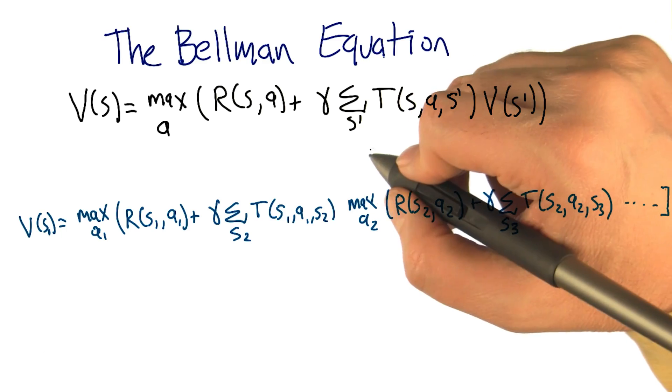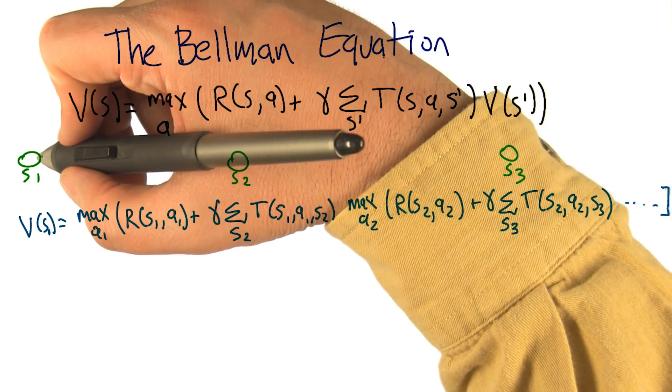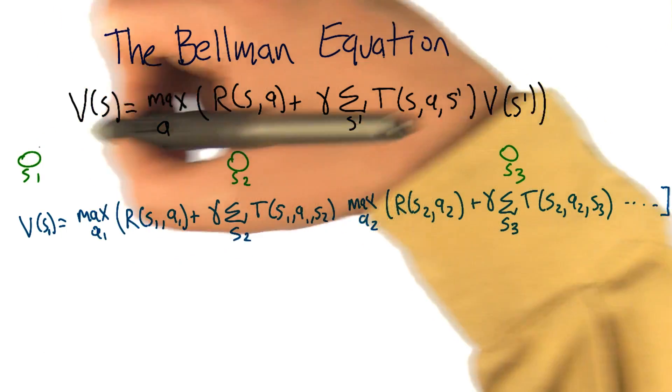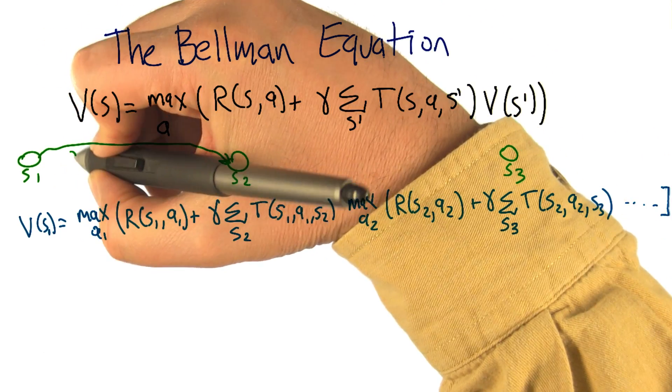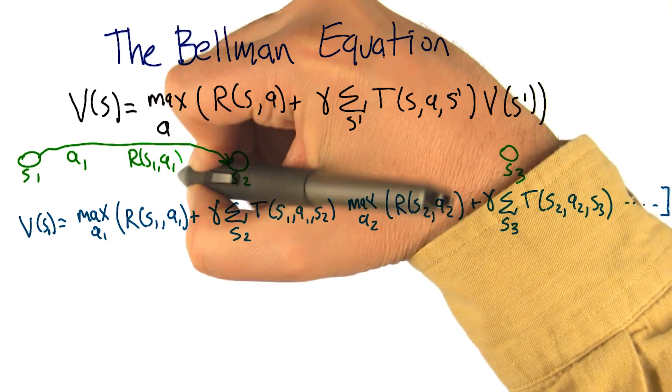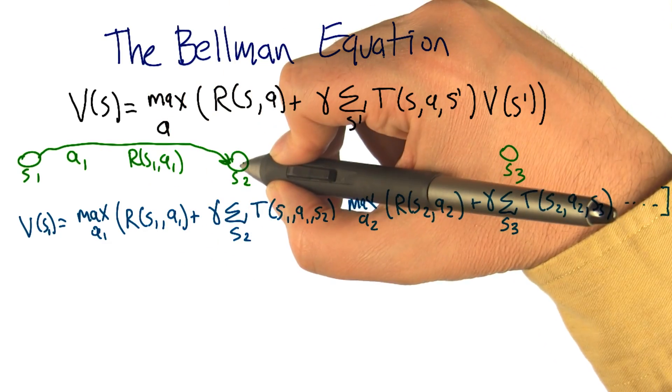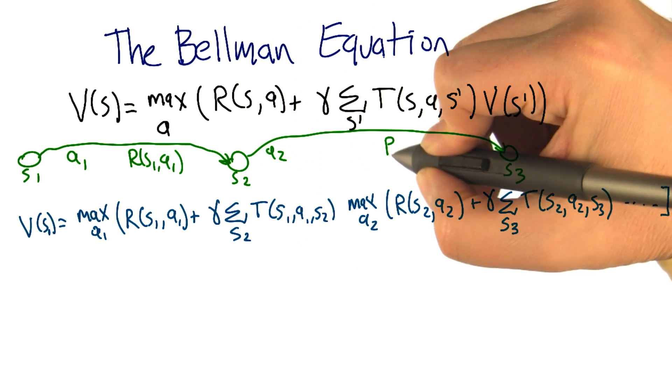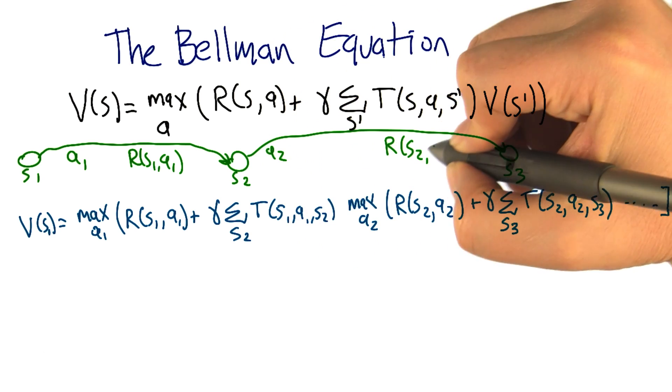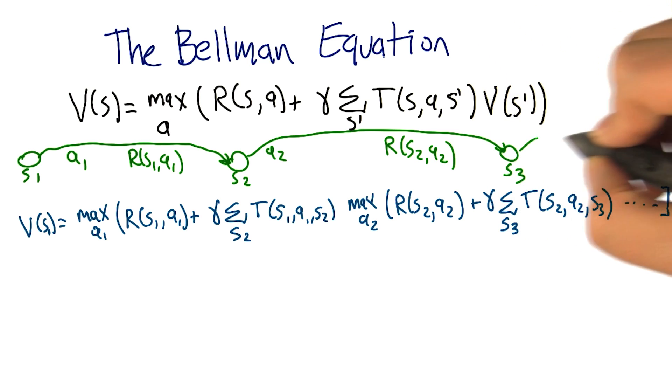So what the Bellman equation is supposed to represent is the sequence of rewards received by an agent that's hopping around in the world. It starts off in state S1, it takes action A1, it gets reward RS1A1 for that. Then it lands in state S2, and from there it takes action A2, and receives reward RS2A2, and lands up in S3, and this whole process just continues ad infinitum.